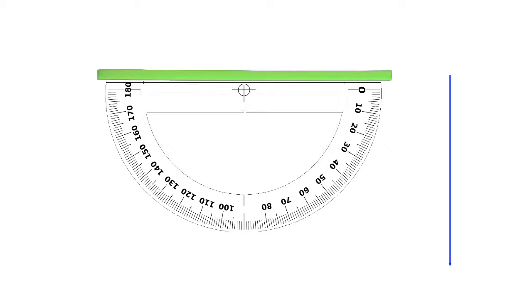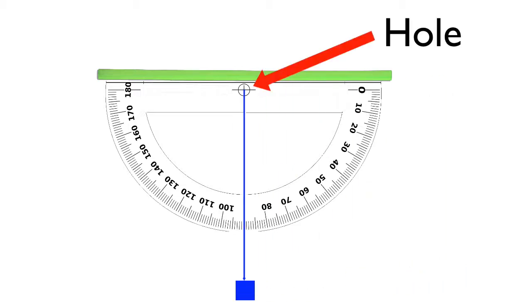Then find some string and a small weight you can tie to one end of the string. Next, tie the other end of the string to the hole in the protractor.